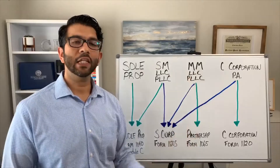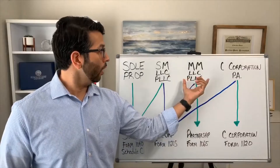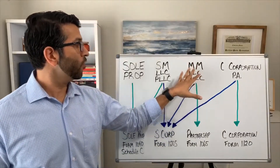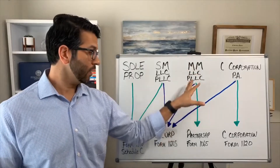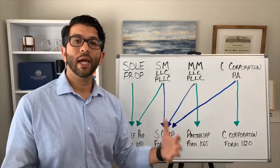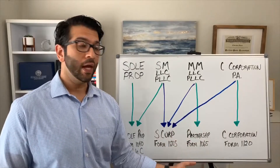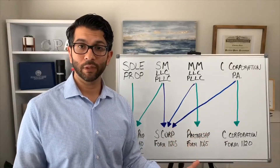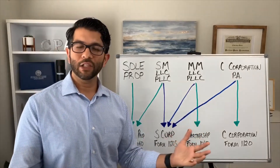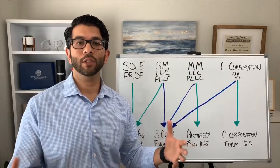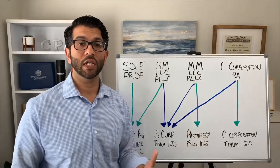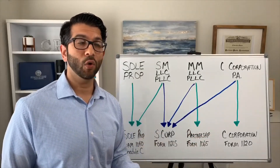Moving on — MM LLC stands for multi-member LLC. The owners of an LLC are called members. The default tax classification for a multi-member LLC is a partnership, and so you would file a separate set of tax documents called Form 1065 — that's the tax return a partnership completes, or your accountant would complete for you. There's no checkbox when you're forming your multi-member LLC indicating it will be treated this way from a tax perspective — this is information your accountant should be advising you on.